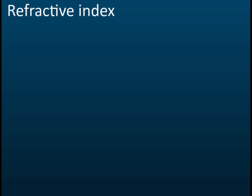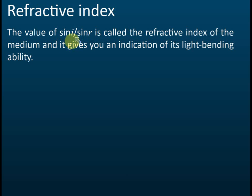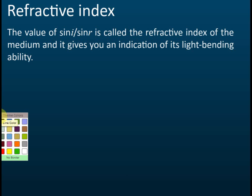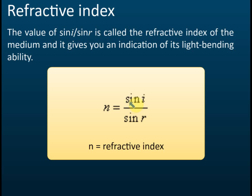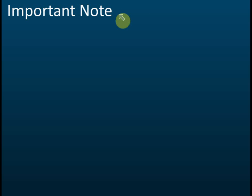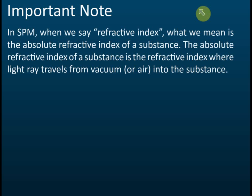The value of sine i over sine r is called the refractive index. So sine i over sine r — this is called the refractive index. In an exam, when they ask you to find the refractive index, that's what you should give. Important notes about the refractive index in SPM: when we say refractive index, we mean the absolute refractive index of a substance.